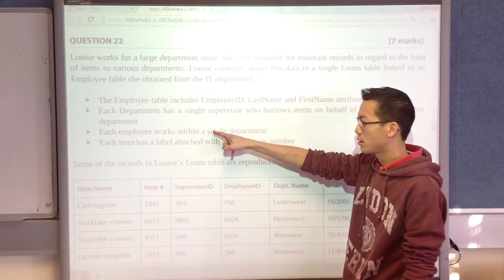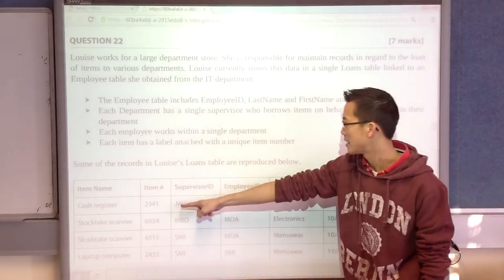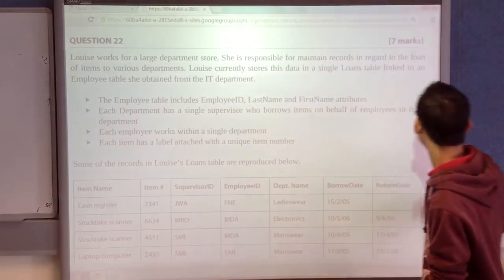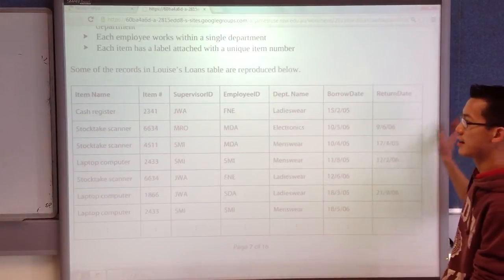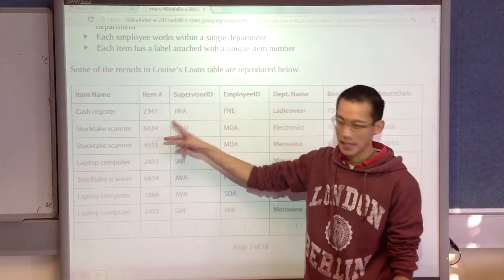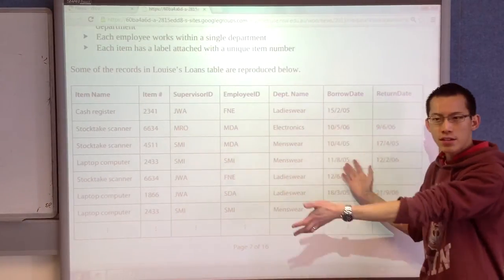Each employee works within a single department. And each item has a label attached with a unique item number. So the name is not unique. As you can see, for instance, there's two stock-take scanners here. Unique number. All right, so here are some of the records.